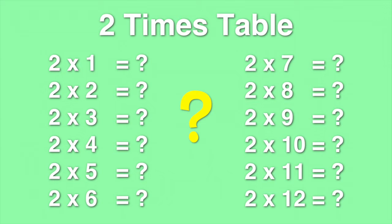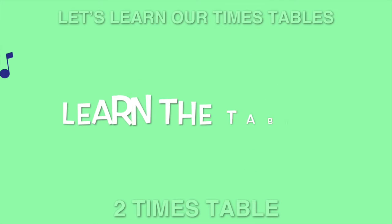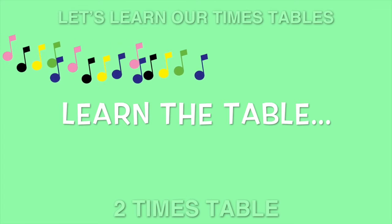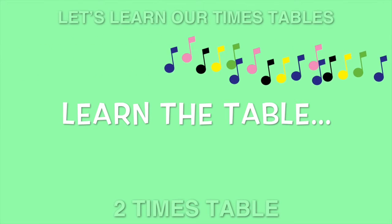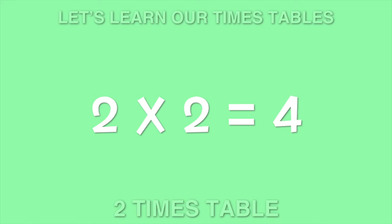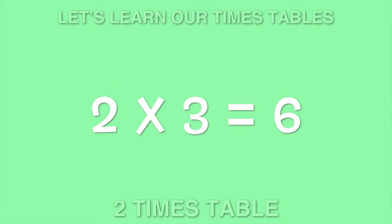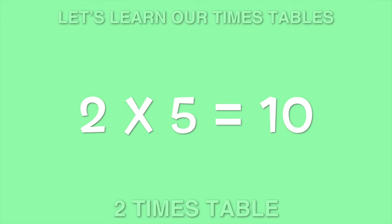Let's learn our times tables one by one. Two times one is two. Two times two is four. Two times three is six. Two times four is eight.